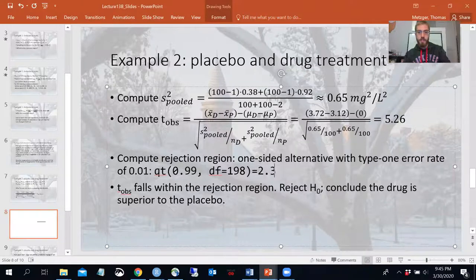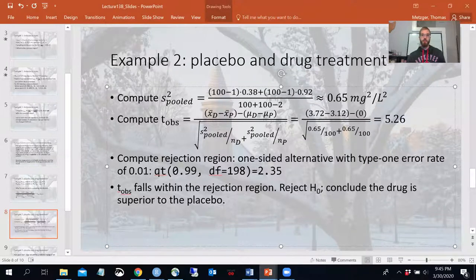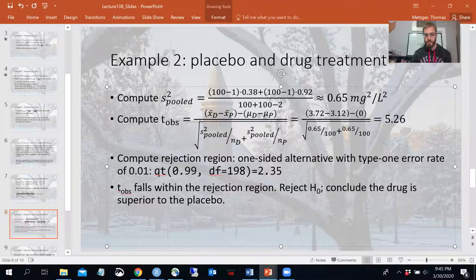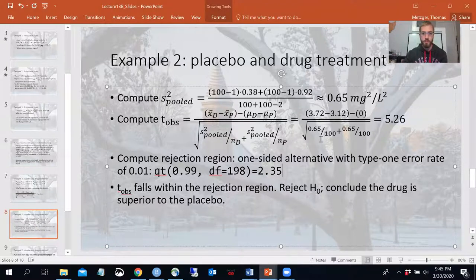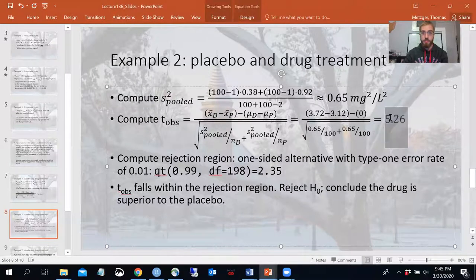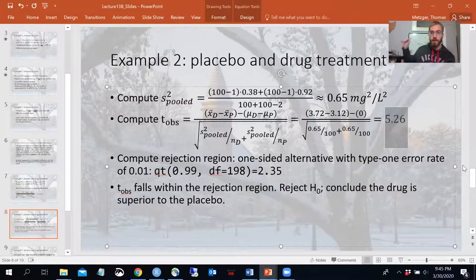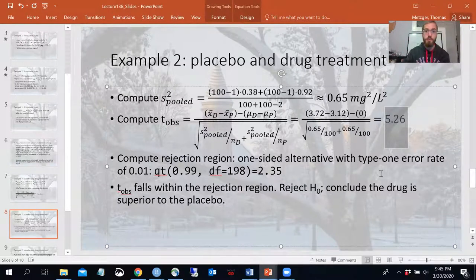Well, that didn't change it very much, did it? And the reason for that, remember, is as I get more and more degrees of freedom in a T distribution, it gets closer to a normal distribution. So that barely changed it in this case. Either way, my observed T statistic of 5.26 lies beyond the cutoff region that I drew there at 2.35. So we do reject our null hypothesis and conclude the drug is superior to the placebo.